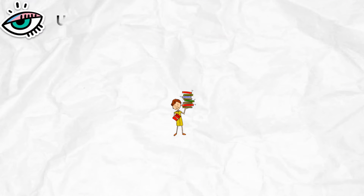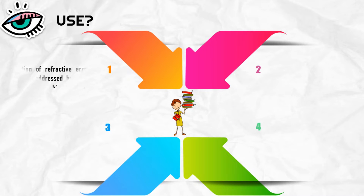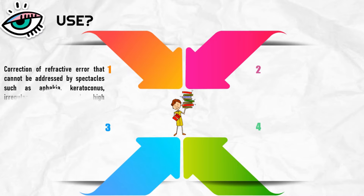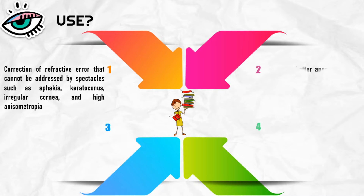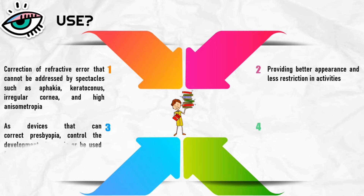There are a few uses of contact lenses. Firstly, they function as a corrector of refractive error that cannot be addressed by spectacles, such as aphakia, keratoconus, irregular cornea, and high anisometropia. Secondly, they provide better appearance and less restriction in activities, especially sports. Thirdly, they function as devices that can correct presbyopia, control the development of myopia, or be used for augmented vision.